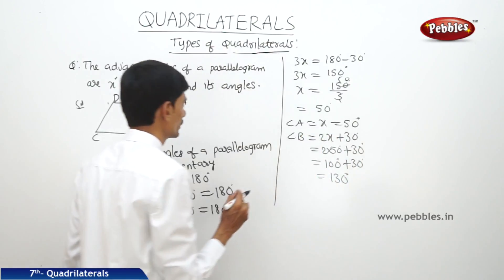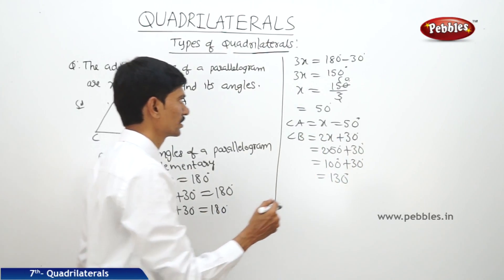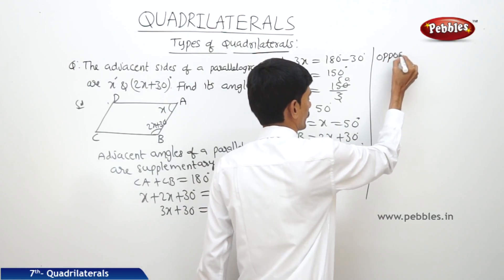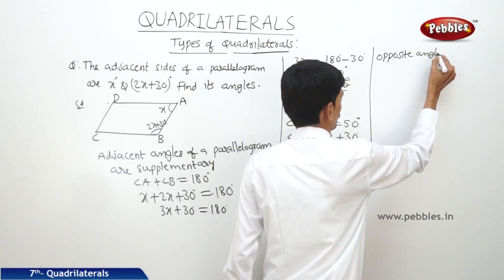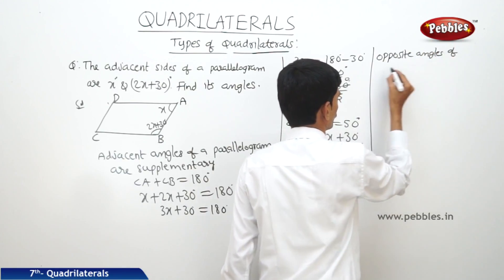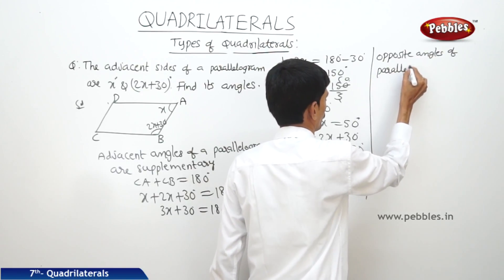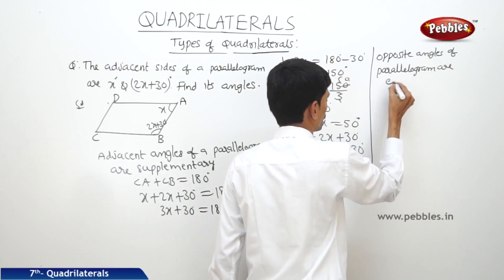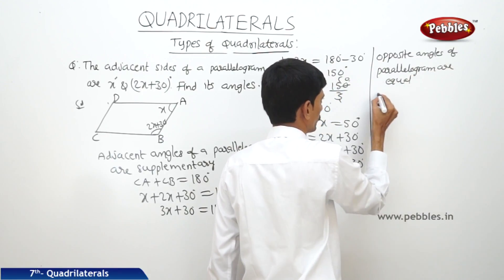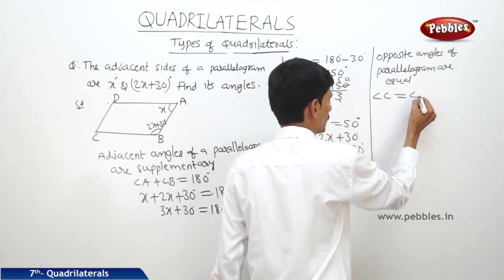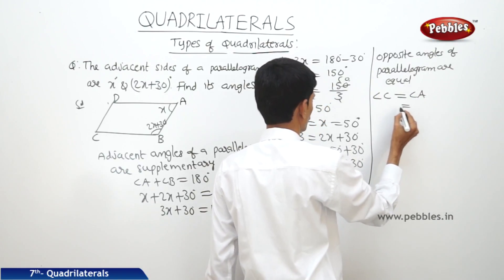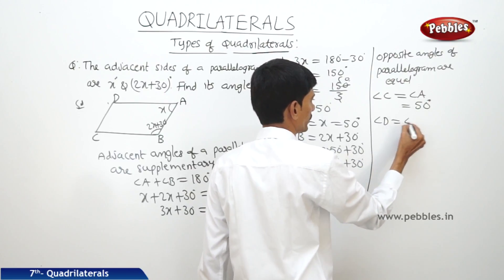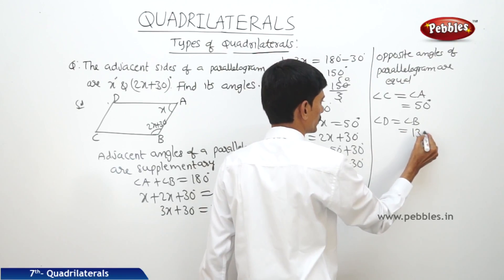Similarly, in a parallelogram, the opposite angles are equal. So angle C equals angle A, so that is 50 degrees. And angle D equals angle B, that is 130 degrees.